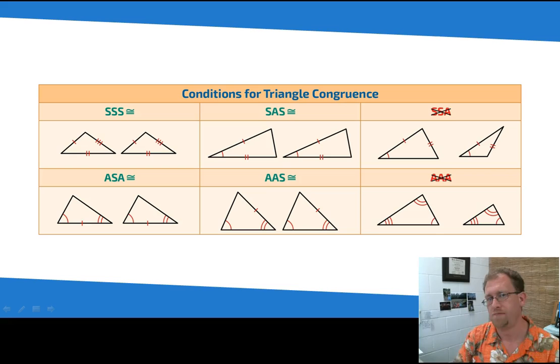Angle, side, angle works. Two angles and the side between them, then you have two congruent triangles. Angle, angle, side works. Two angles and one of the other sides that's not between them. That works.